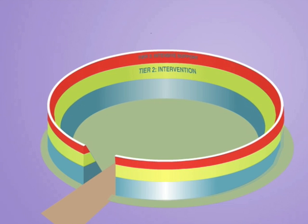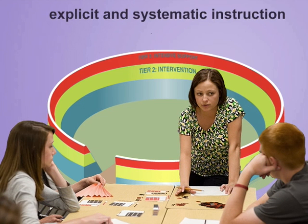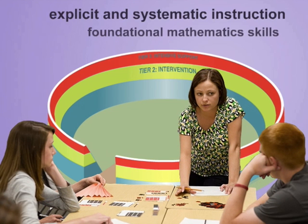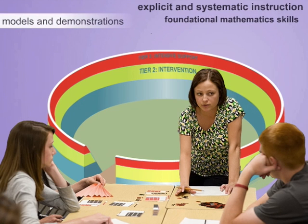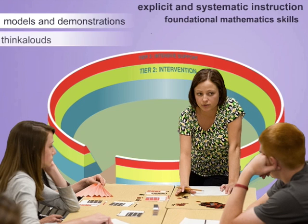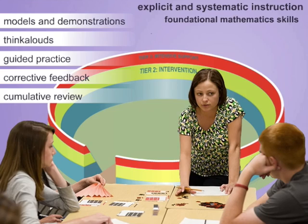Students who are placed in Tier 2 and Tier 3 mathematics interventions need explicit and systematic instruction to build proficiency in foundational mathematics skills. Such instruction includes providing models and demonstrations of problem-solving, verbalizing thought processes through think-alouds, guided and scaffolded practice, corrective and specific feedback, and frequent cumulative review.